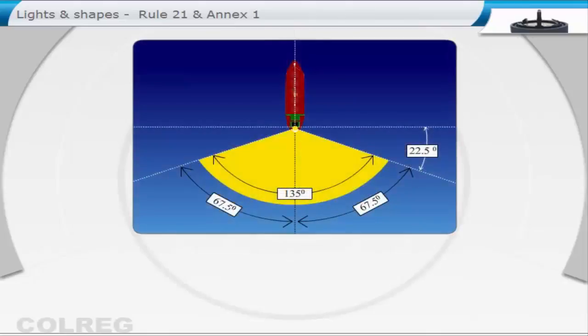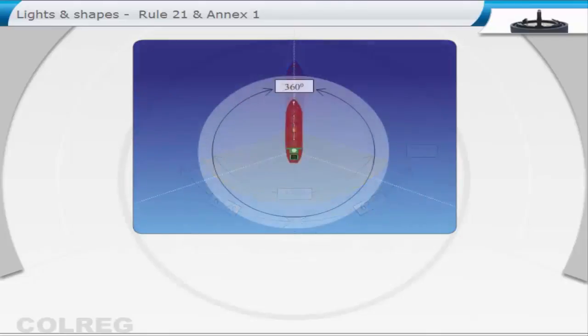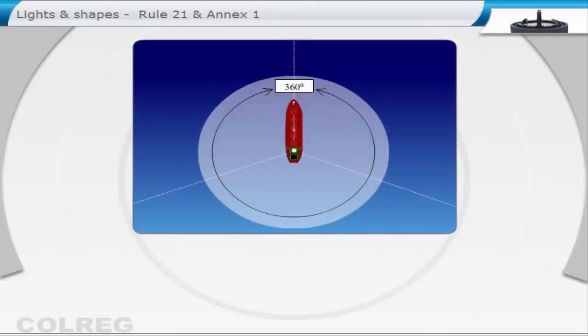A towing light, meaning a yellow light, has the same features as the stern light. Additionally, the all-round signal lights, which are sometimes used, can be red, green or white in colour, and shown all round the horizon, a full 360 degrees.